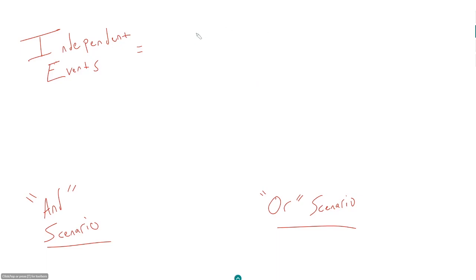What do I mean by independent events? The classic example the GMAT likes to use is coin flips. Coin flips are independent of each other, meaning the outcome of one coin flip has no impact on the outcome of the second. No matter what, the probability of getting heads on any coin flip is 50%, and the probability of getting tails is 50%. They'll often specify this by saying 'flip a fair coin' or 'a regular coin,' confirming it's not rigged.